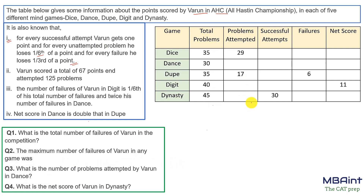We know total problems, total problems attempted, successful attempts, failures, and net score. For failure it would be one-third; successful is one point; unattempted is the difference between total problems and problems attempted, multiplied by one-sixth with negative marking. The second point says Varun scored a total of 67 points and attempted 125 problems — so if we sum all numbers in the attempts column, this is 125, and the net score total is 67.